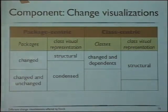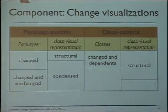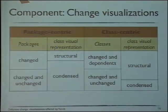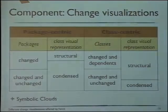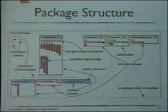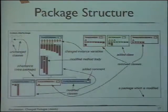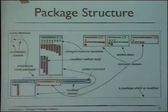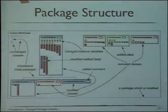For the class-centric visualization, that's basically just inheritance. You have changed classes with a structural view, or all classes with a condensed and structural view. The last visualization is the symbolic cloud. The edges in this case are the intra-package relationships. If you want to select also inter-package, those are the ones crossing among packages. A package with a blue border has changed, so it appears as a modification.